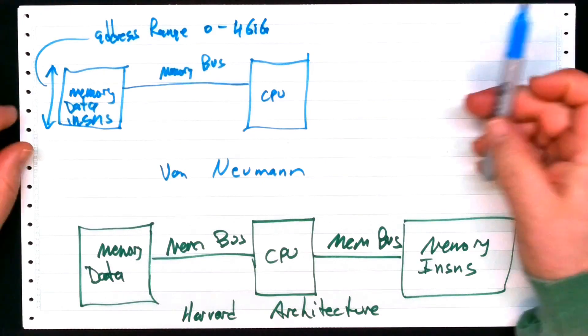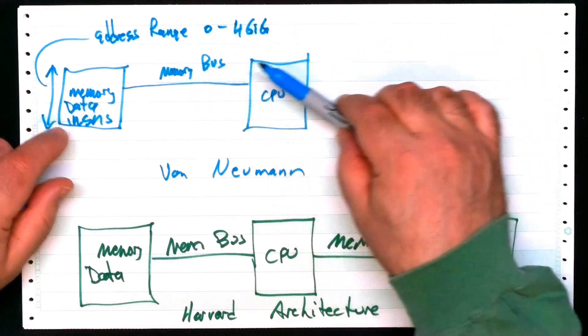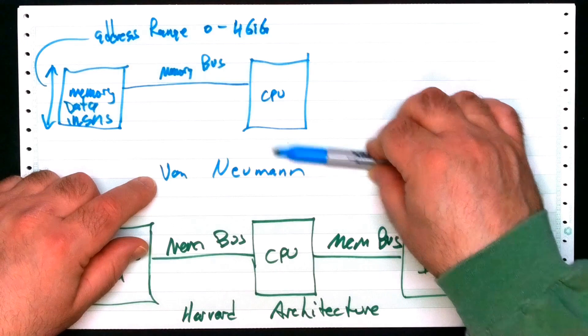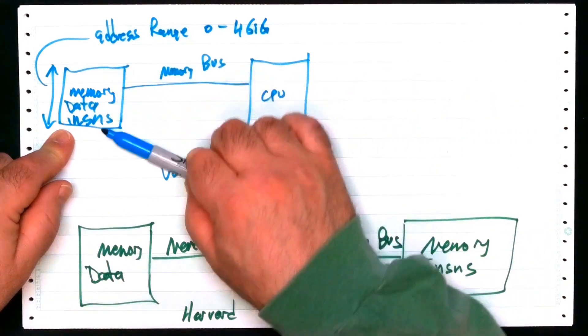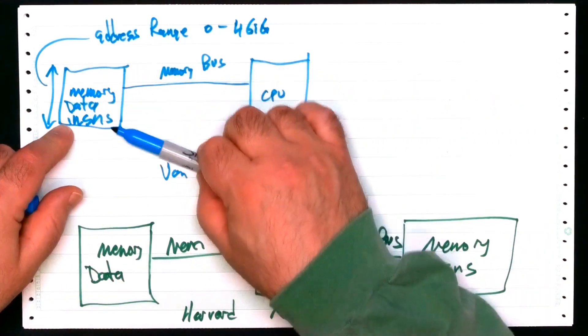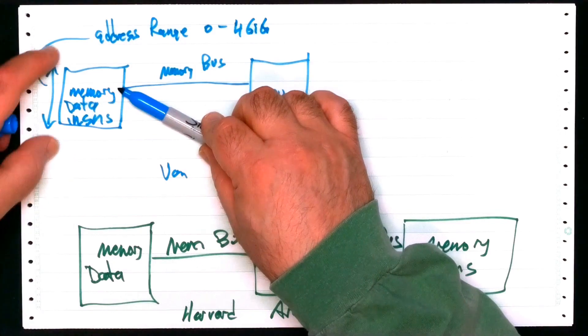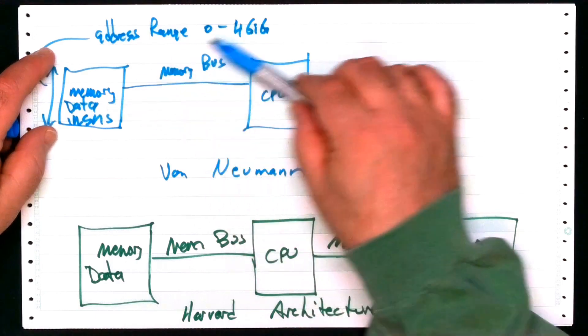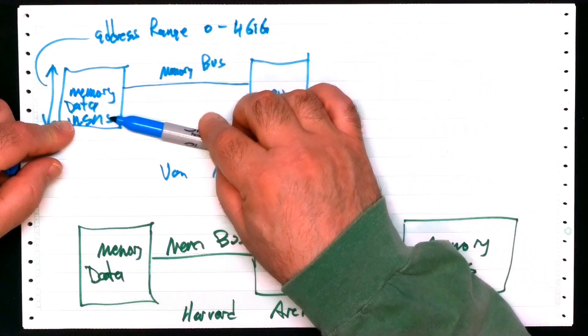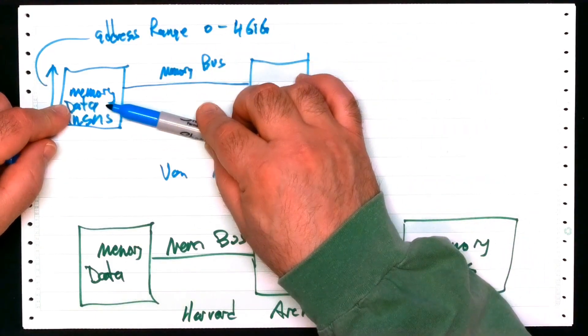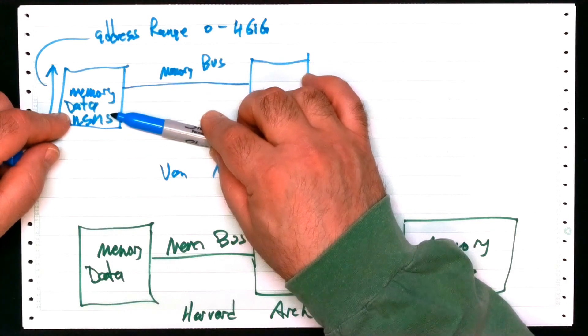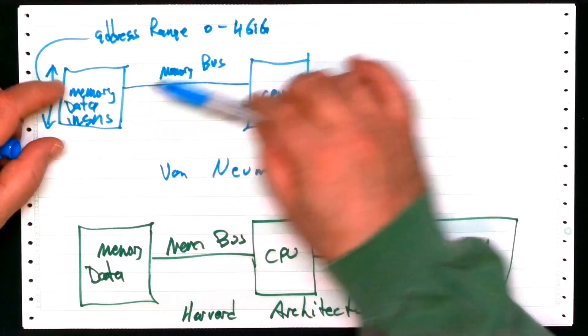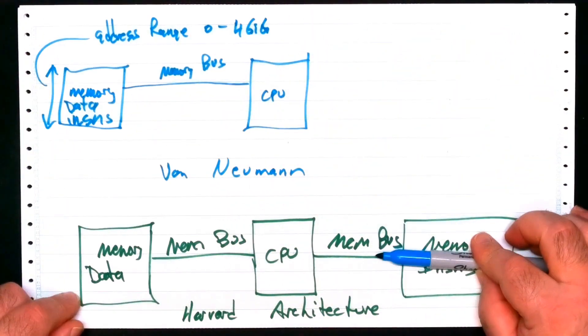Given an address in a von Neumann machine, it maps into one single unified address space. Everything's in that one address space. So if I give you an address of an instruction, an address of a data, those two have different addresses. This is unified. This is not.